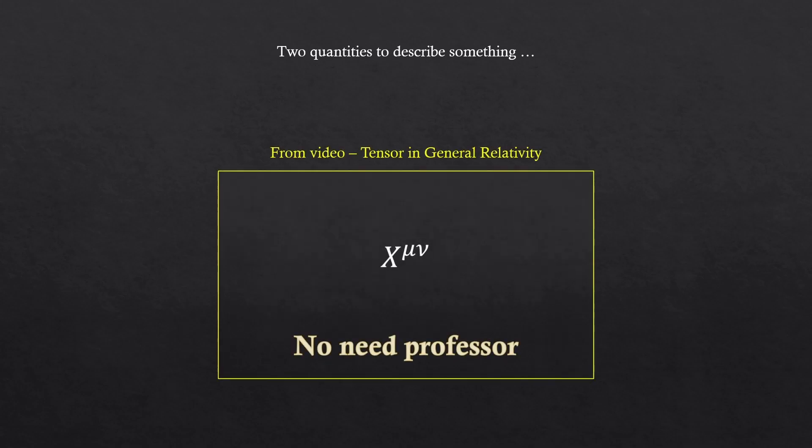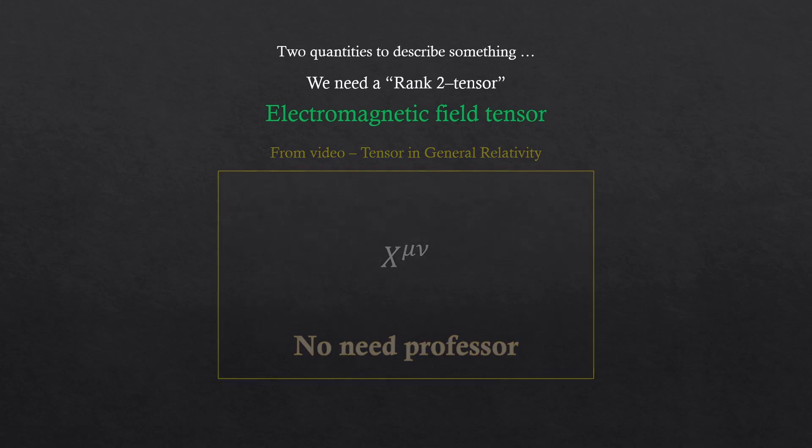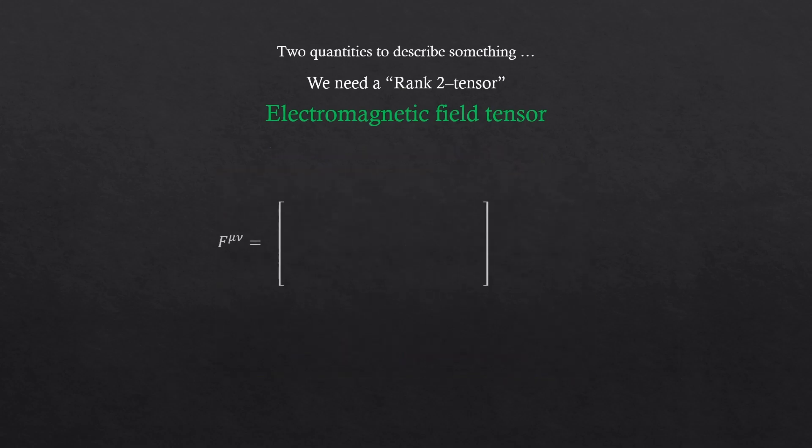Anyway, two quantities to describe something in nature. If you have watched this video, Tensor in General Relativity, you'd probably know what I'm about to suggest. We need a rank 2 tensor. And let's call that electromagnetic field tensor. So, we'll use mu as a row index and nu as a column index. Because normally, the first index of a tensor corresponds to the row numbers, and the second index corresponds to the column numbers. It's just a convention. You could do the other way, but trust me, almost all books go this way.